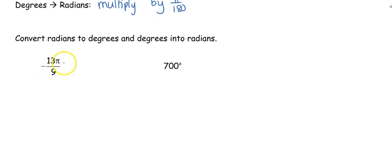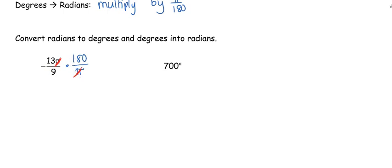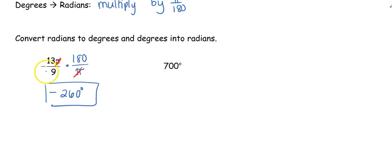I know it's in radians because of the pi, so I want to get rid of the pi — that means pi needs to go on the bottom, leaving 180 on top. Pi on top and bottom cancel. In your calculator, multiply negative 13 times 180 then divide by 9, and you end up with negative 260 degrees.